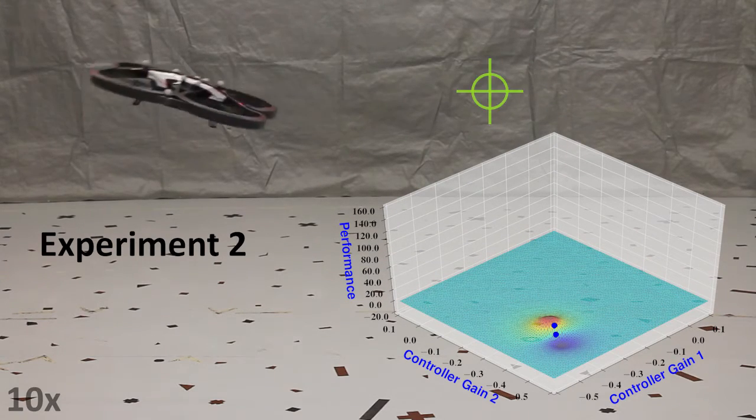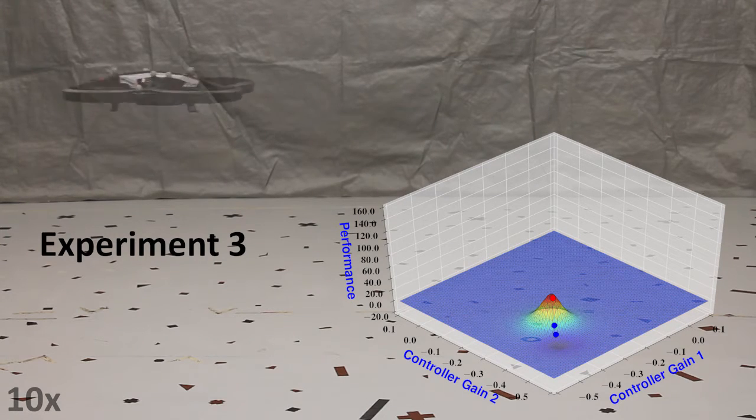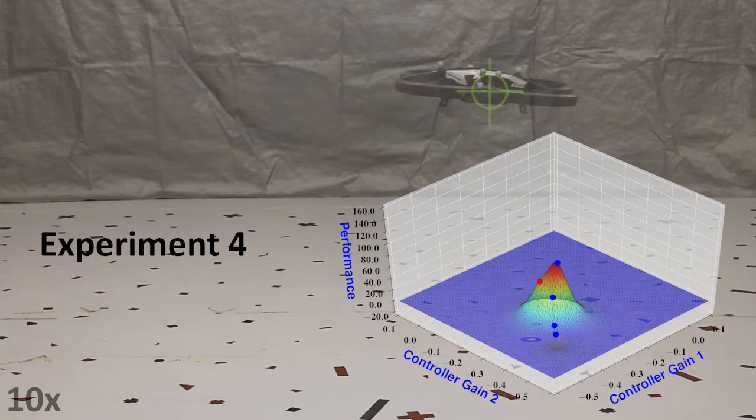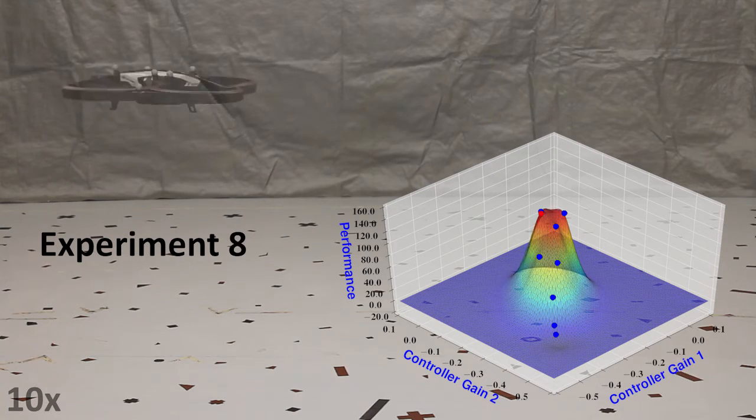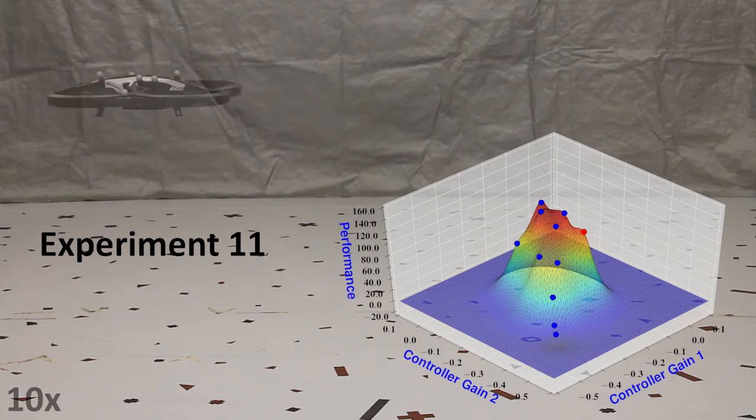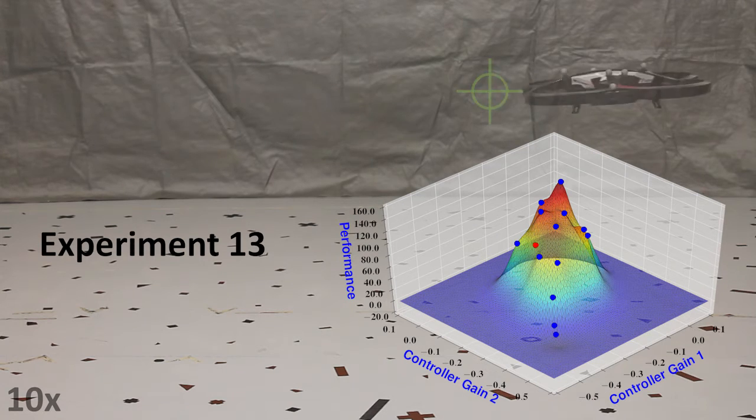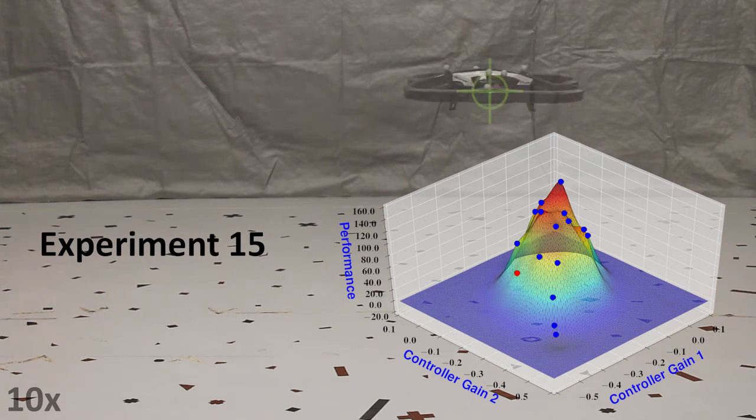The algorithm then intelligently selects and evaluates new controller parameters, for which sufficient knowledge about their safety is available. As we evaluate different safe controller parameters, we gain more knowledge about the underlying performance function, which is approximated by a Gaussian process.